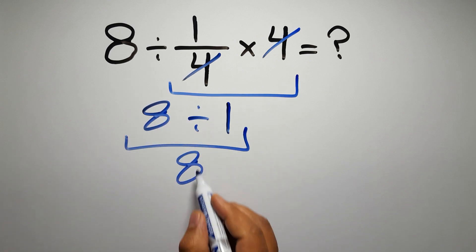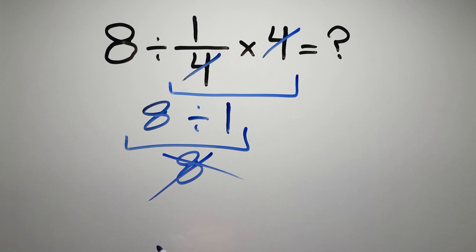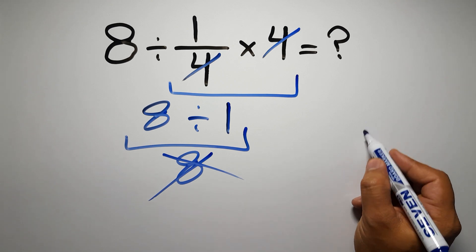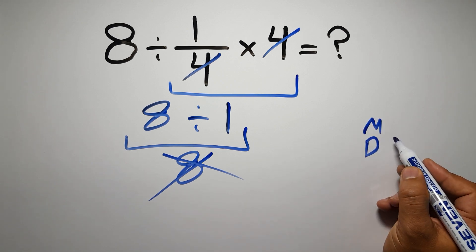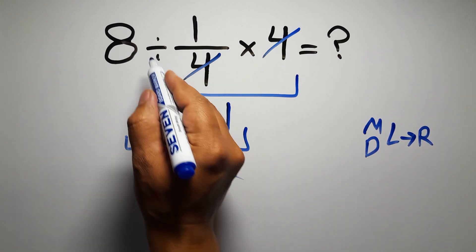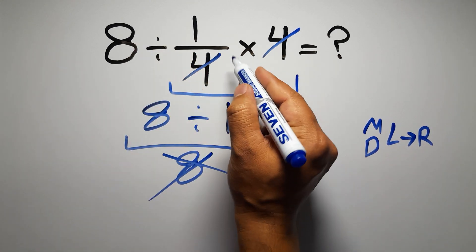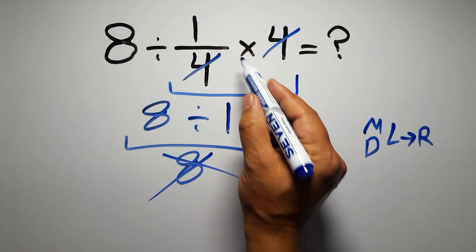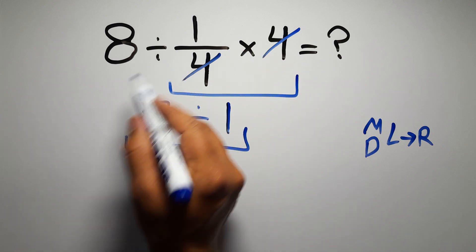But this answer is not correct because according to the order of operations, multiplication and division have equal priority and we have to work from left to right. So here first we have to do this division, then this multiplication. If we do this multiplication before this division, it is wrong.